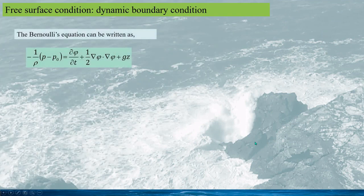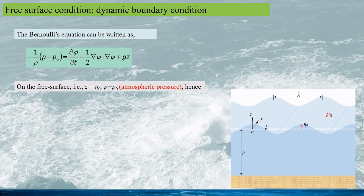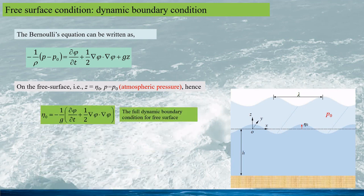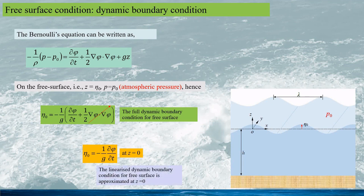The dynamic boundary condition for the free surface is derived from Bernoulli's equation. On the free surface where z equals eta, the pressure P equals the atmospheric pressure P0. This gives the expression for the dynamic boundary condition on the free surface. Again, by dropping the higher-order terms, we obtain the linearized dynamic boundary condition for the free surface, approximated at z equals zero.